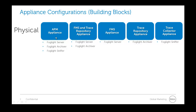You can have an APM appliance, and basically what you're looking to do is run all three architectural components: a Foglight server, a Foglight archiver, and a Foglight sniffer. If you take all three and put them on one machine, this is our APM appliance. If you take two — the Foglight server and the Foglight archiver — this is our FMS and trace repository appliance.